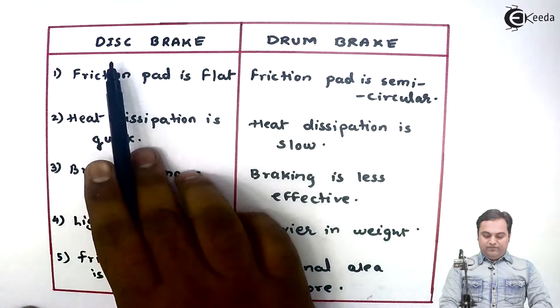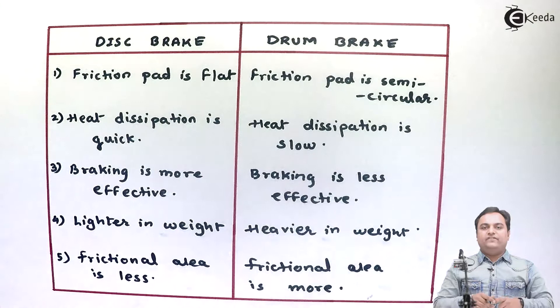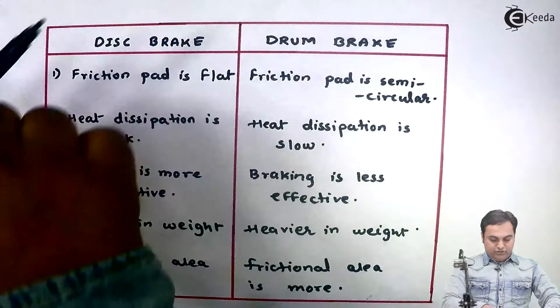The first point: in case of disc brake, the friction pad is flat — that is, the friction surface in case of disc brake is a flat rectangular sheet. In case of drum brake, the friction pad is semi-circular, as we have seen in the internal expanding brake.